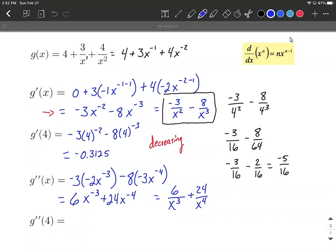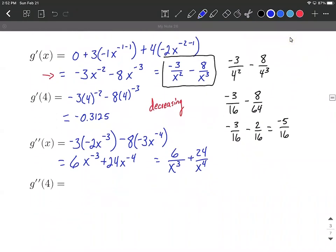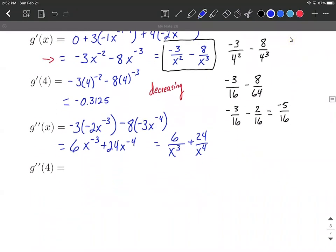Now let's evaluate our second derivative at four and talk about what that means about our graph. So again, you kind of have two different versions here. You could plug into the one with negative exponents. So that'd be six times four to the negative third power plus 24 times four to the negative fourth power. And if you're allowed your calculator, you can just punch it in, we get 0.1875.